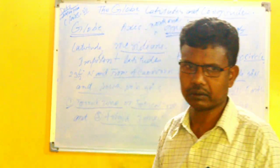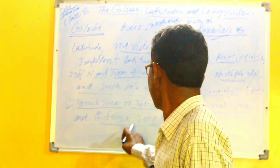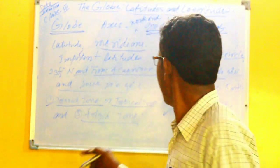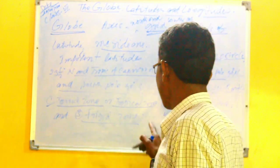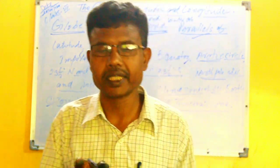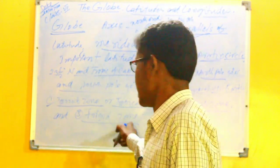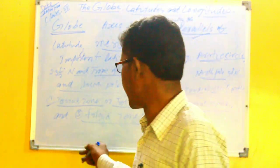The third zone is the frigid zone or cold zone. There are also two frigid zones. The north frigid zone lies between the Arctic Circle and the North Pole, and the south frigid zone lies between the Antarctic Circle and the South Pole. These two regions receive the least sun rays, so they are the coldest zones of the world. Antarctica comes under this zone.